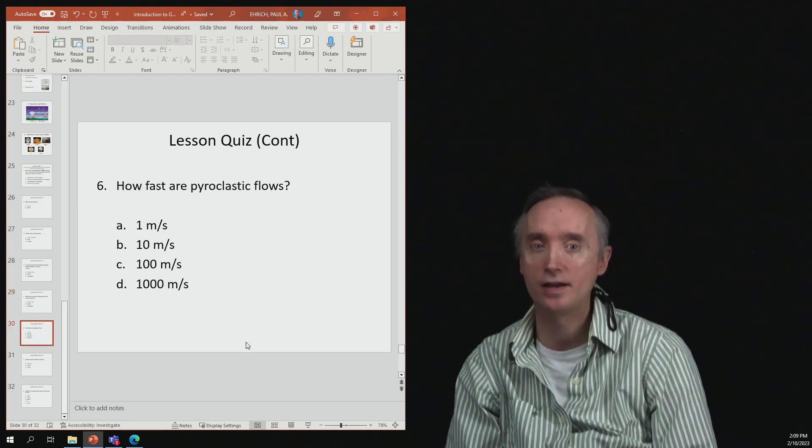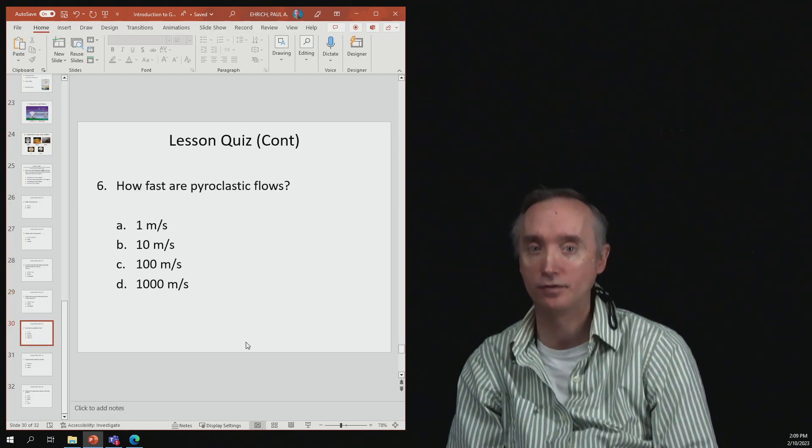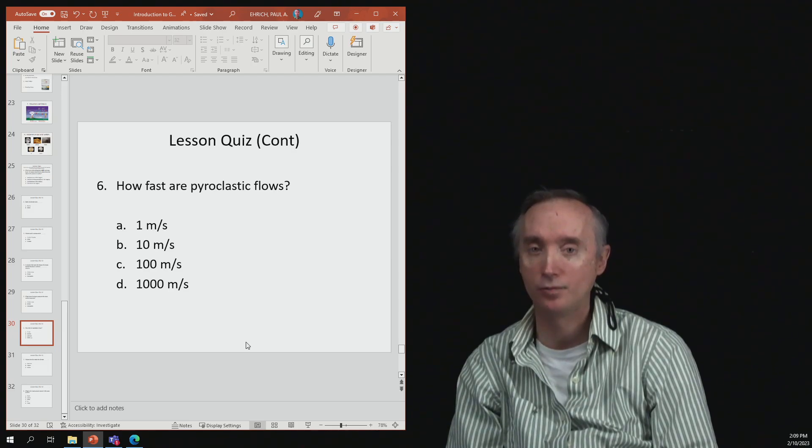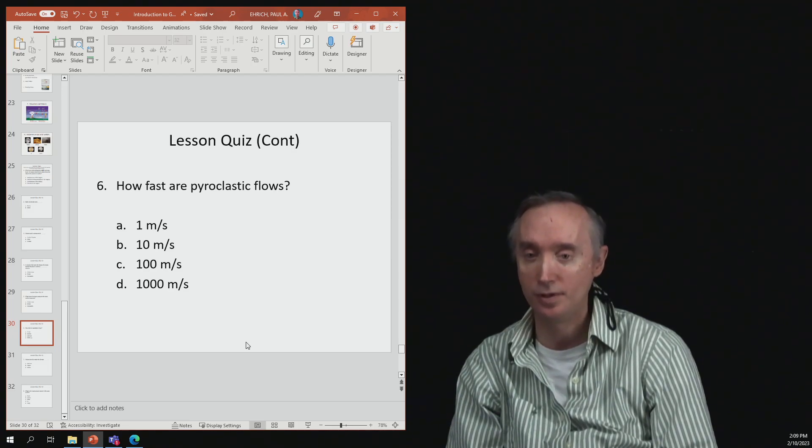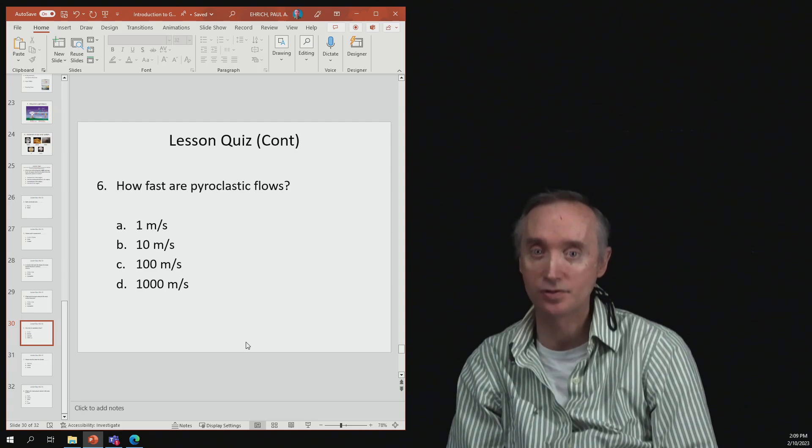Number six: how fast are pyroclastic flows? We said 200 meters per second, which is closest to 100 meters per second.